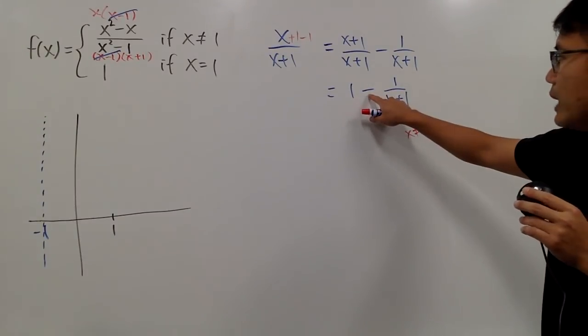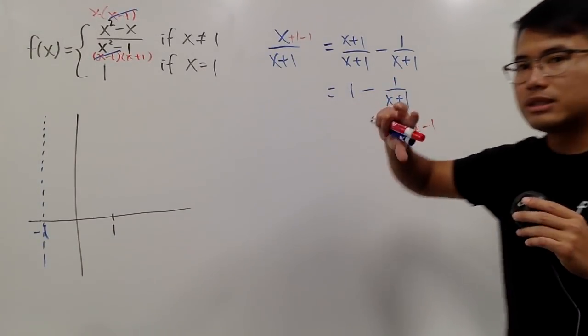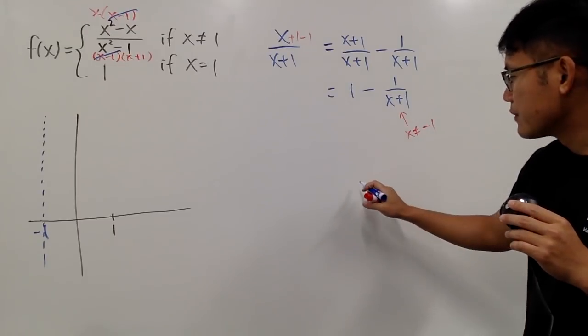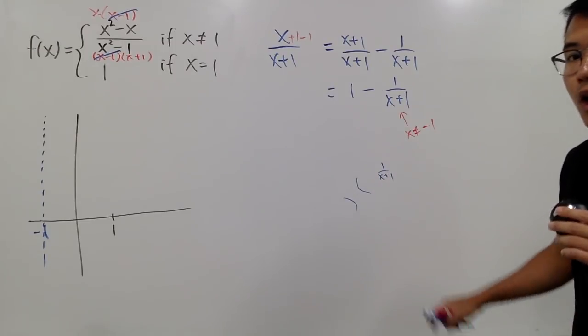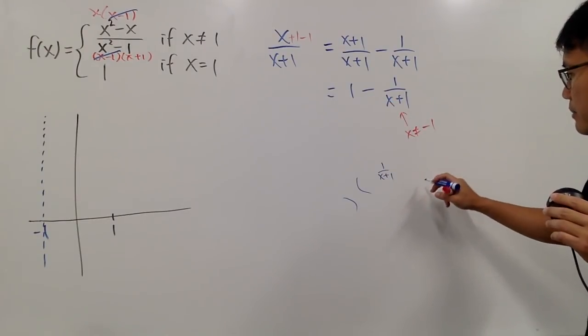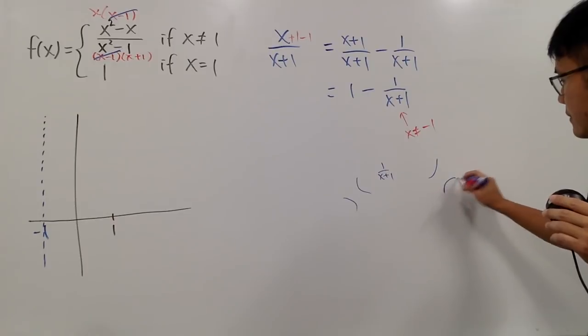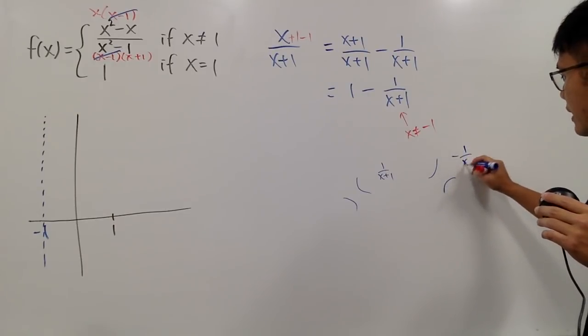Well, when we have a negative multiplied by this, it's just a reflection, right? Instead of going this, which is the usual look of 1 over x plus 1, when we have this negative, it becomes like that instead. So this is the negative 1 over x plus 1.